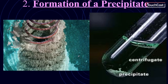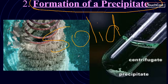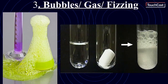The second indicator or sign of a chemical reaction is going to be the formation of a precipitate. A precipitate is a solid. The eighth grade word is 'precipitate' — it sounds like precipitation, but it's 'precipitate' and it means solid. It's kind of like if I pour two liquids together and then they solidify. If you look down here in the bottom of this test tube, that is a precipitate. It is a solid.